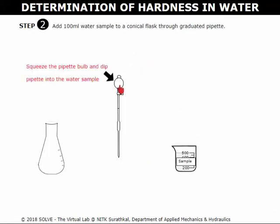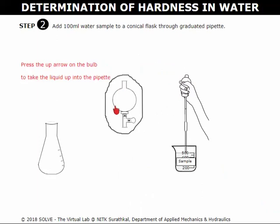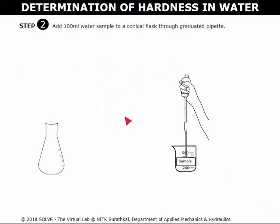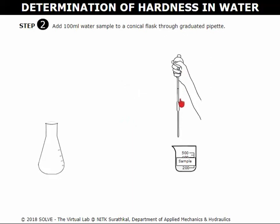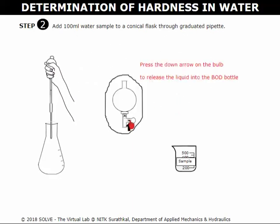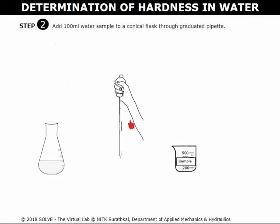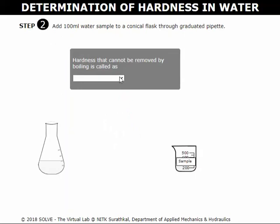Click here to squeeze the pipette bulb and place it into the water sample. Click on the upward pointing arrow to pipette 100 ml of water sample. Click on the downward pointing arrow to release the sample into the conical flask. Select the correct answer for this pop-up question to proceed to the next step.